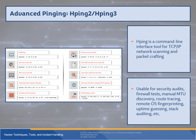For advanced pinging, we can look at hping — a command-line tool for TCP/IP scanning and packet crafting. You can custom-write your own packets to get specific results. It's great for auditing, firewall testing, manual MTU (maximum transmission unit) discovery, route tracing, OS fingerprinting, uptime guessing, and stack auditing. Stack auditing refers to the development stack for a web-based service — for example, Facebook was originally built on the LAMP stack. Some example commands include ICMP scans, ACK scans, UDP scans, specific ports, sequence numbers, and SYN flood attacks with different TCP flags.